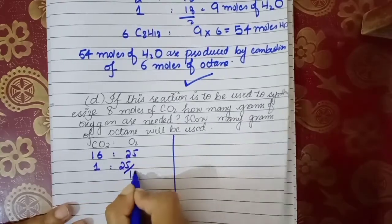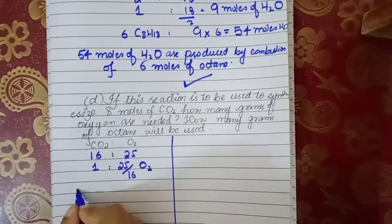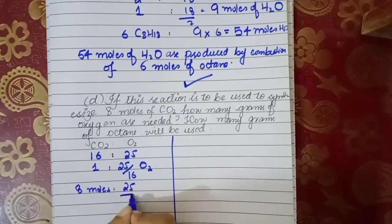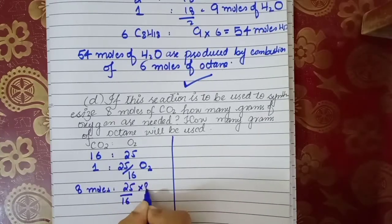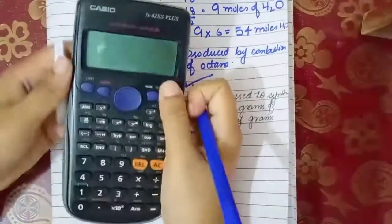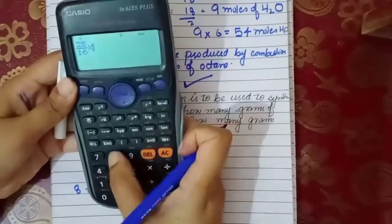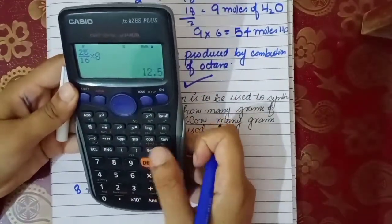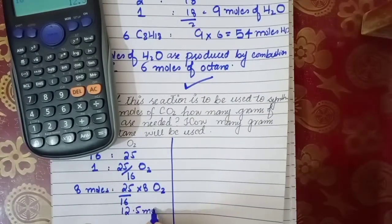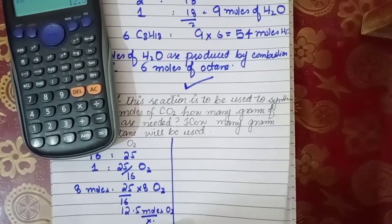According to the equation, 16 moles of CO₂ correspond to 25 moles of oxygen. By comparison, 1 mole of CO₂ equals 25/16 moles of O₂. So 8 moles of CO₂ equals 25/16 multiplied by 8, giving 12.5 moles of O₂.